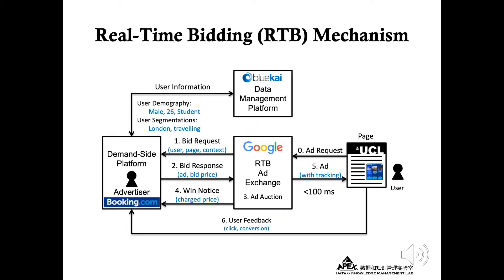Firstly, we briefly introduce the RTB mechanism. When a user pays a visit to a website, an ad request is sent to an RTB ad exchange platform, such as Google Ads. An auction of the opportunity to display the ad will be held in an ad exchange. The advertisers will bid for the chance to display their own ads, and the highest bidder will win the auction.